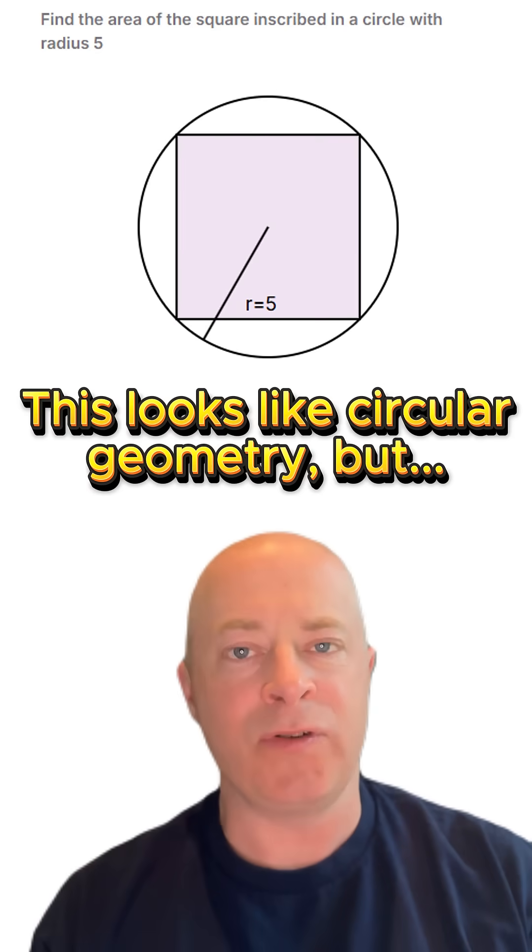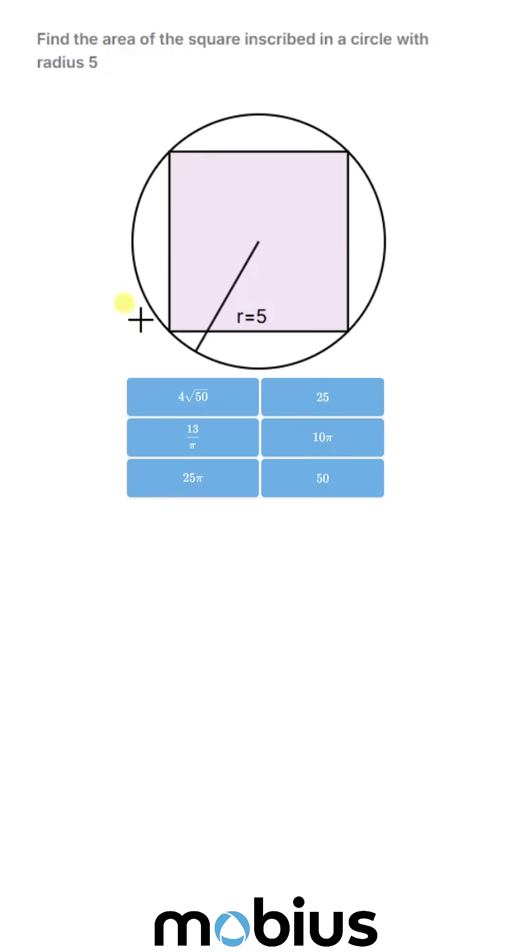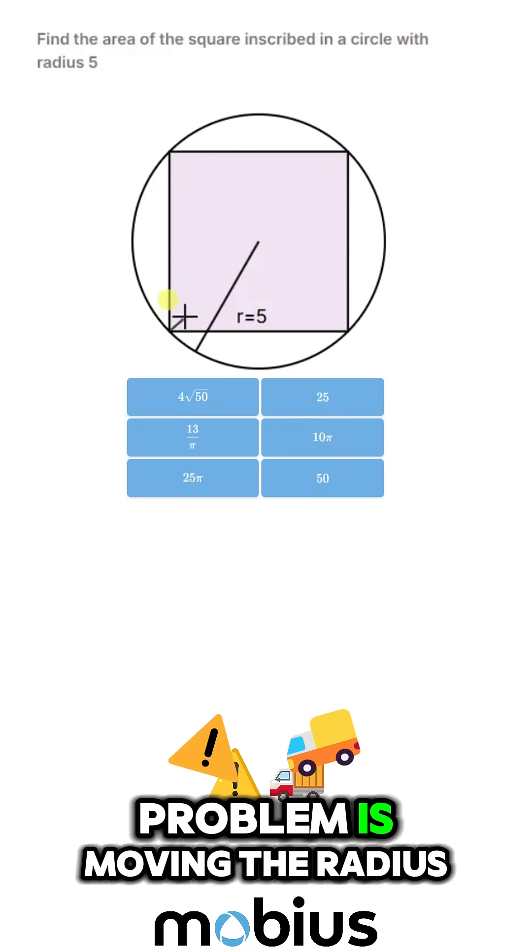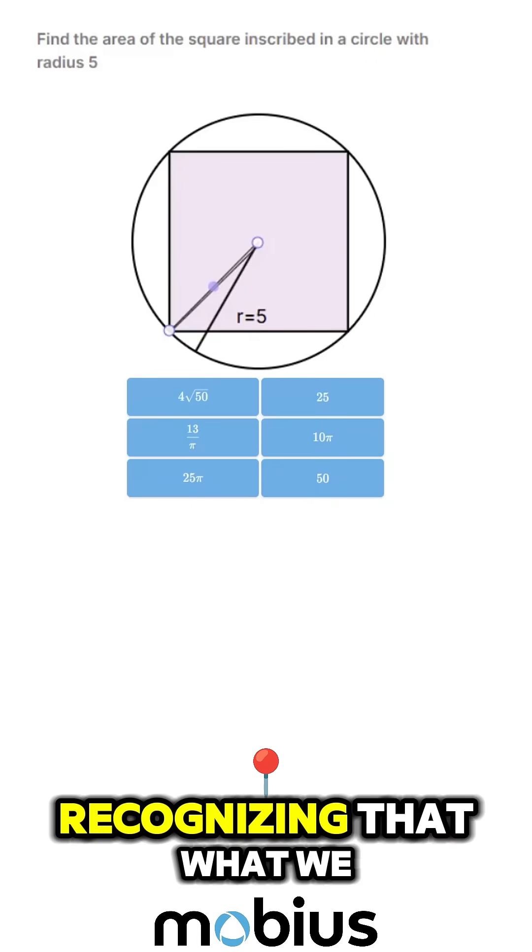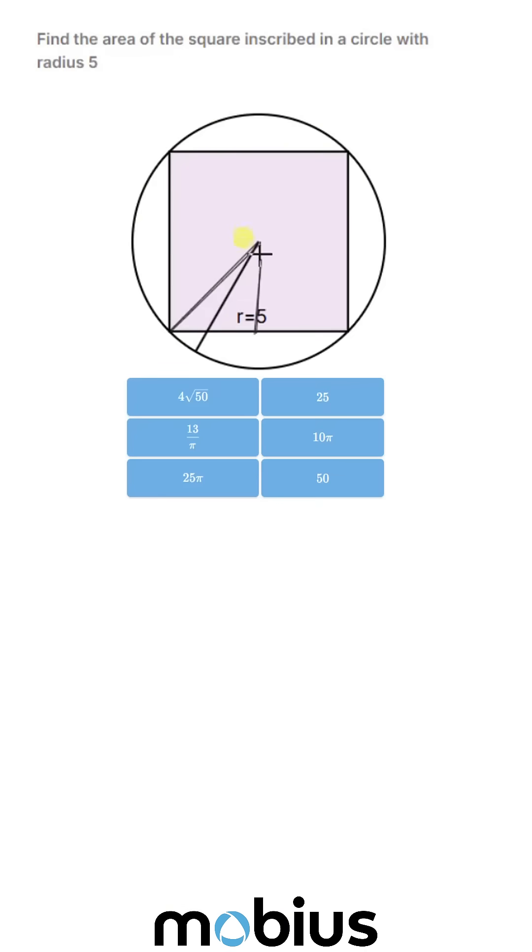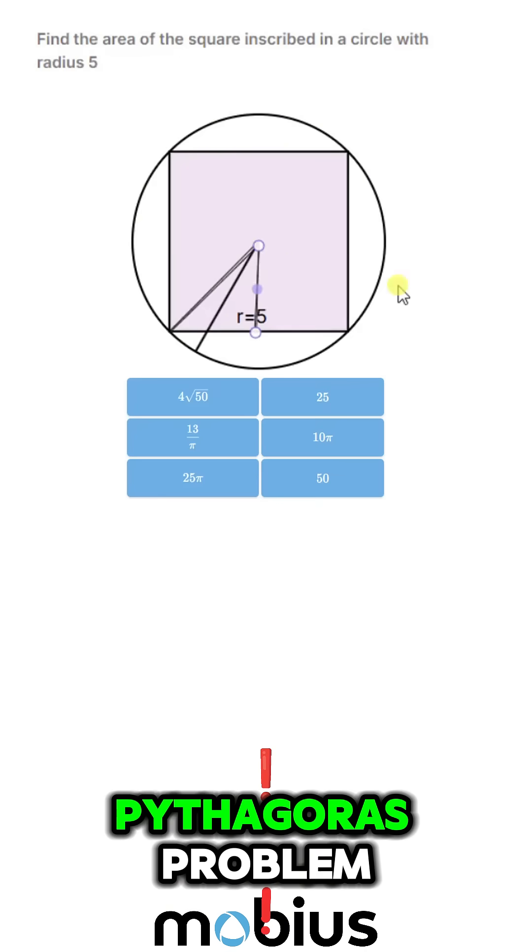This looks like circular geometry, but it's really just Pythagoras. The trick to this problem is moving the radius around to here and recognizing that what we then have is a very simple Pythagoras problem.